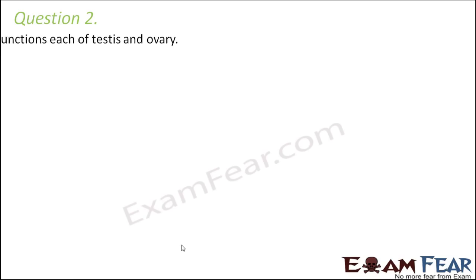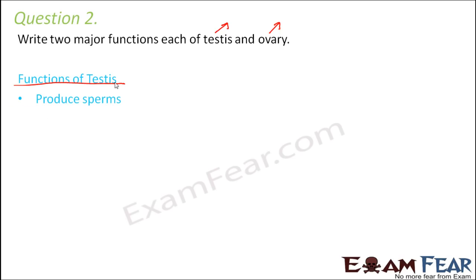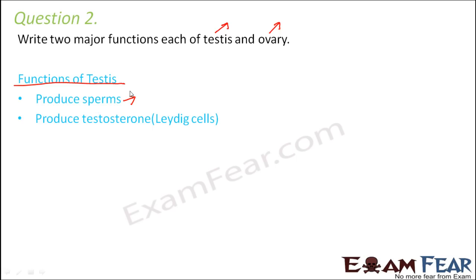Question two: write two major functions each of testis and ovary. The testis is the primary sex organ in males. Its basic functions are to produce the male sex cells — sperms — and to produce the male hormone testosterone. Sperms are produced in the seminiferous tubules, and testosterone is produced by the Leydig cells, which are the interstitial cells.